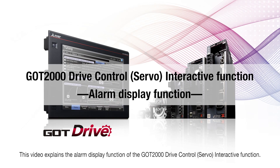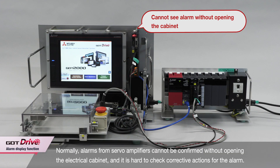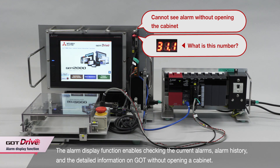We will introduce the Alarm Display function of the GOT2000 Drive Control Interactive function. Normally, alarms from servo amplifiers cannot be confirmed without opening the electrical cabinet, and it is hard to check corrective actions for the alarm. By using the Alarm Display function, you can confirm the current alarms and the detailed information on GOT without opening a cabinet.